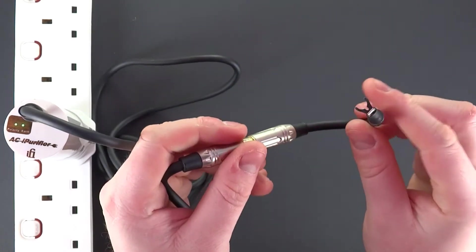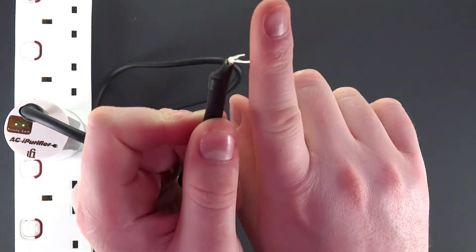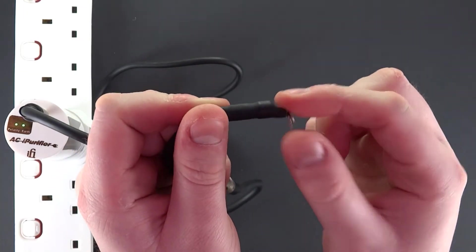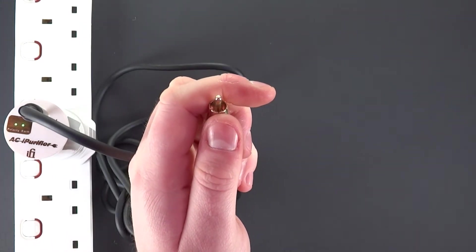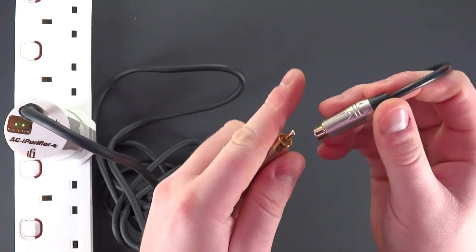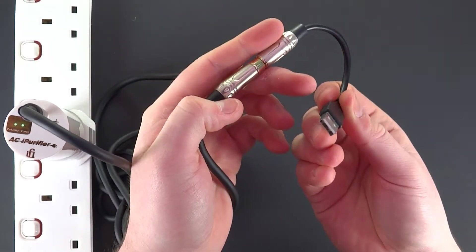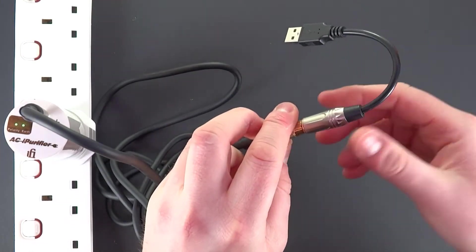Next is a female RCA to DC power supply. Clip it on like so. And last we have a female RCA to USB. Of course, only the ground pin is active.